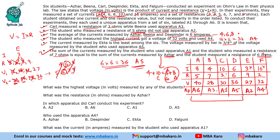So that is how we complete the table — an interesting and challenging set! The highest voltage measured by any student is 40 volts. Azhar measured a resistance of 5 ohms. Carl conducted his experiment using apparatus A1. Apparatus A4 was used by Falvini. The current measured by the student who used apparatus A1 is 10 amperes.